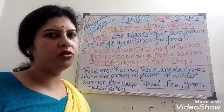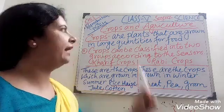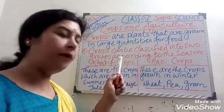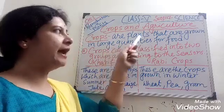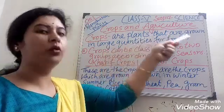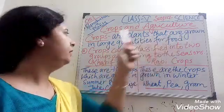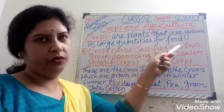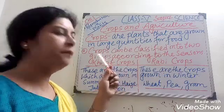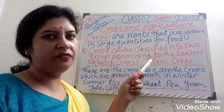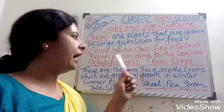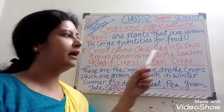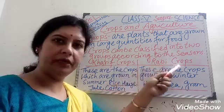Now our next topic is crops and agriculture. Crops are plants that are grown in large quantities for food. Crops can be classified into two groups according to the season: one is kharif crops and the other is rabi crops.